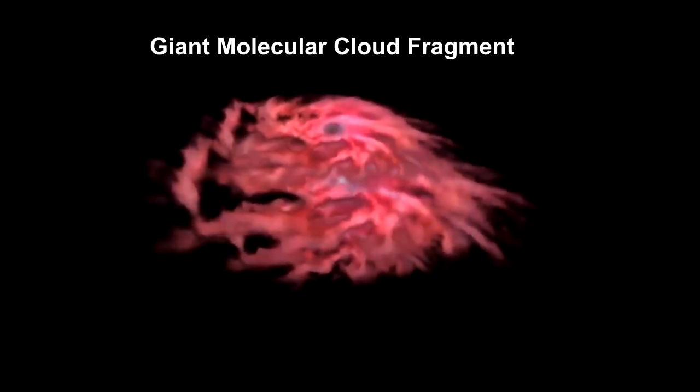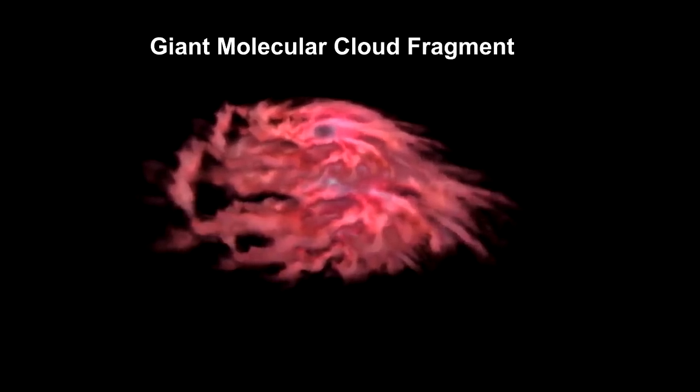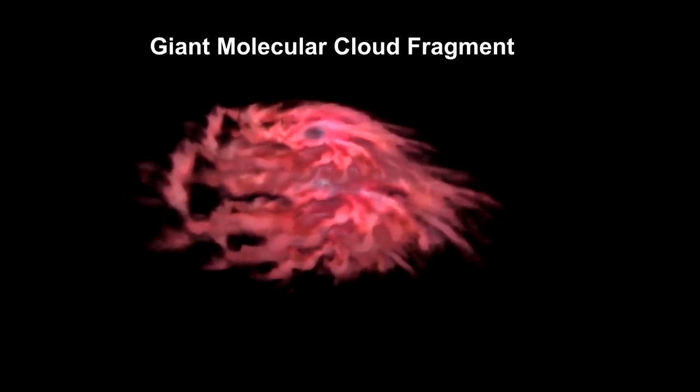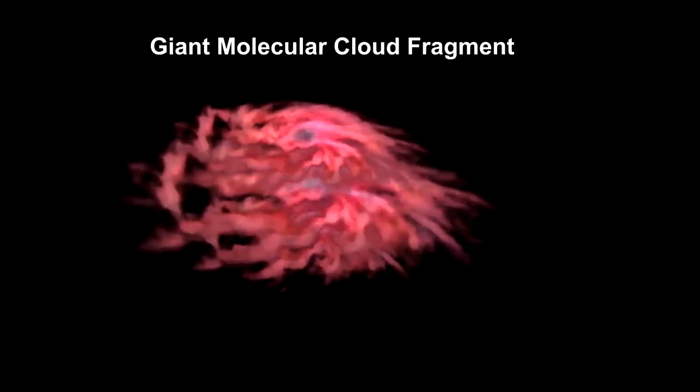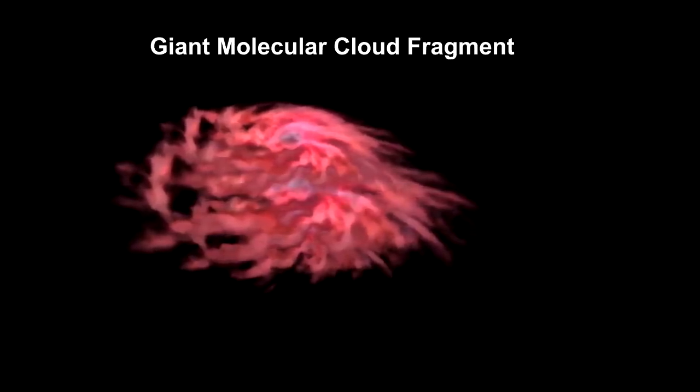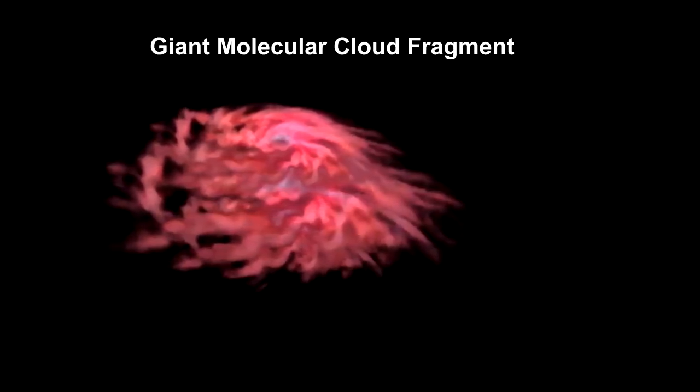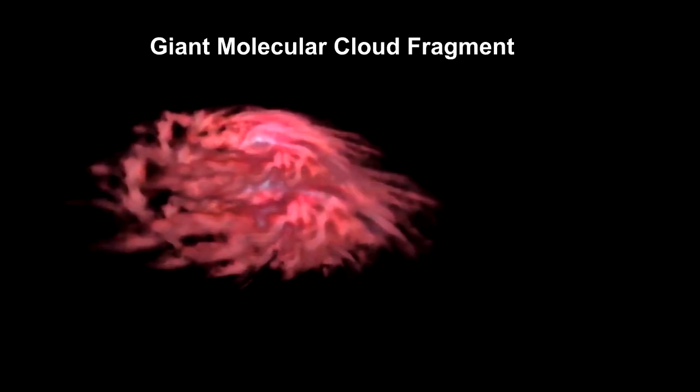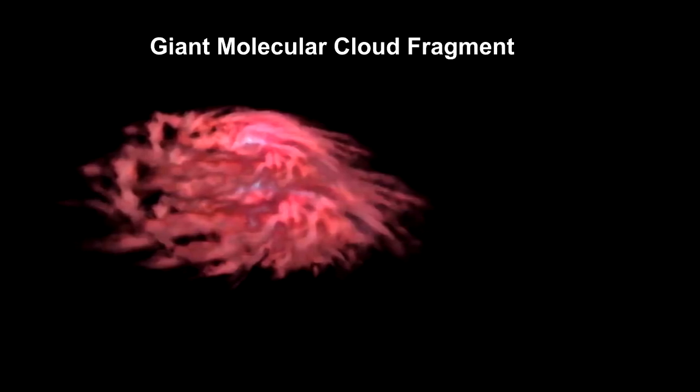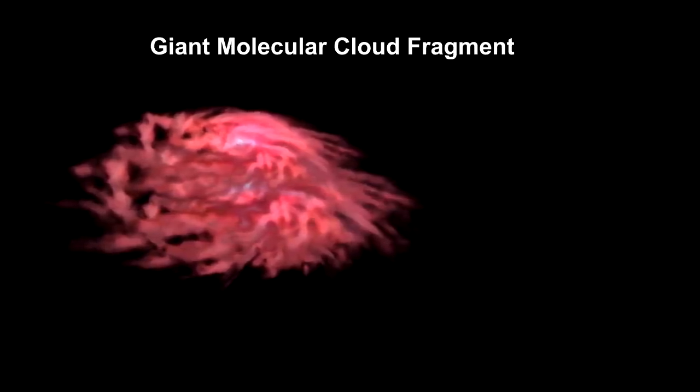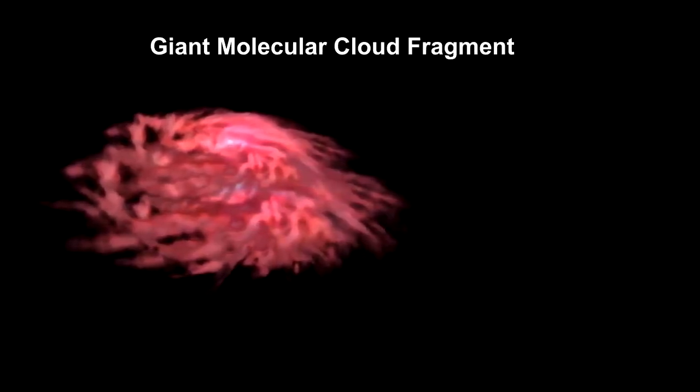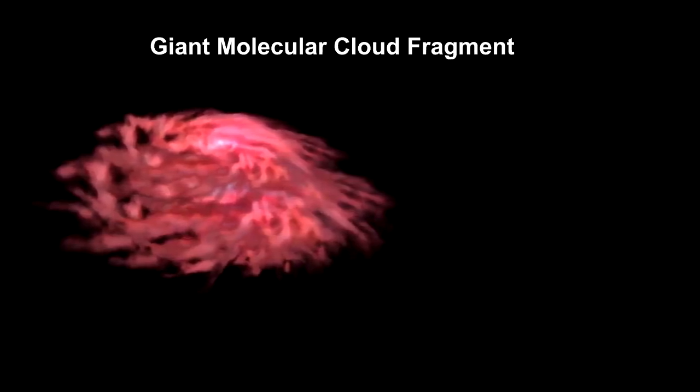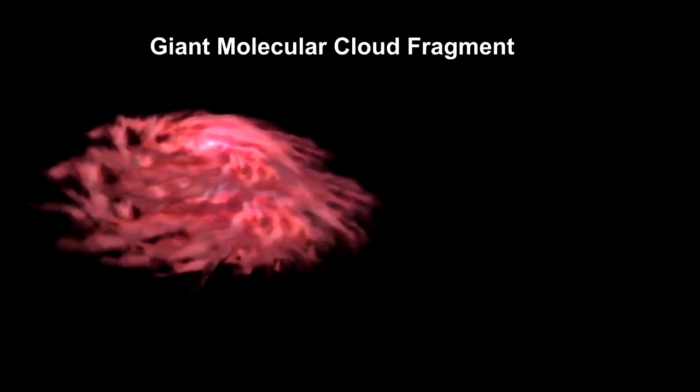In our How Old are Stars segment, we've covered how the circumstellar disk feeds the central object, leading to the formation of protostars, T Tauri stars, and eventually fully formed helium fusion-burning stars. The process from the beginning of the protostar phase to a fully-fledged star is estimated to take from one to two hundred million years.